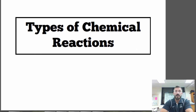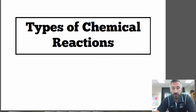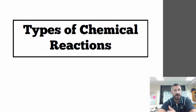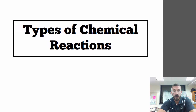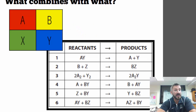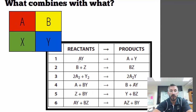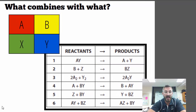Today we're going to learn about types of chemical reactions. There are five types of chemical reactions we're going to talk about, and we're going to go over all of them — what happens when things combine, specifically elements. We're going to put reactions into different categories, and in each one there will be reactants and products.